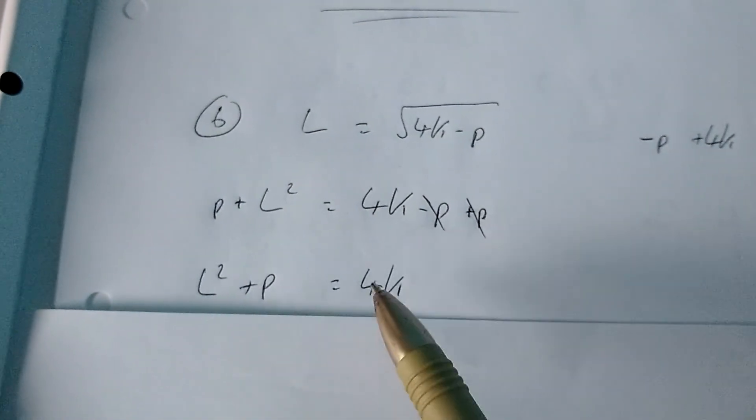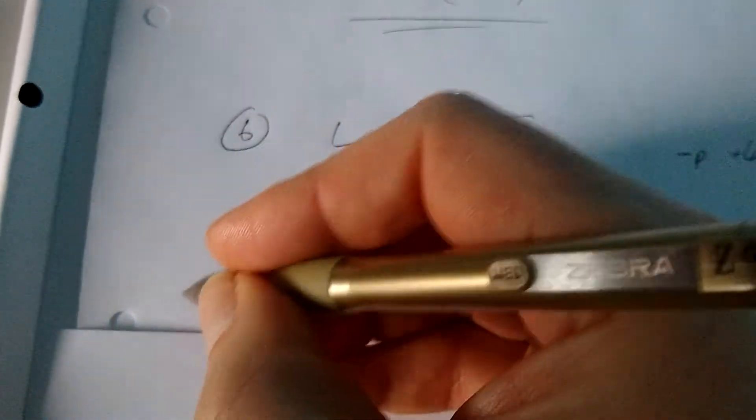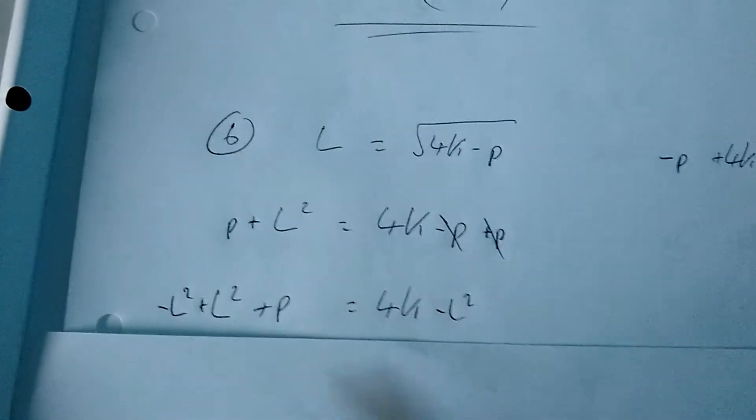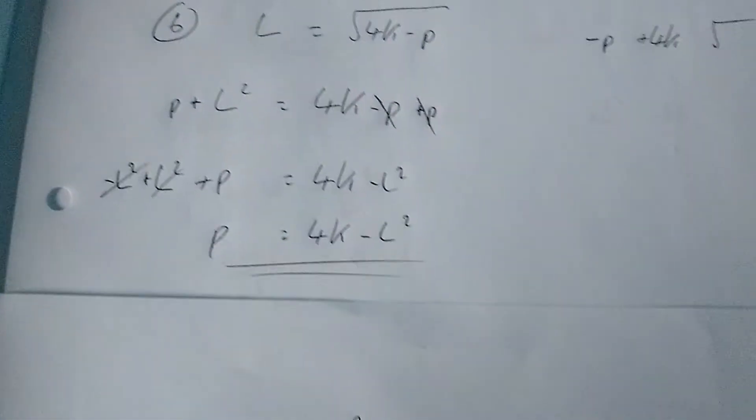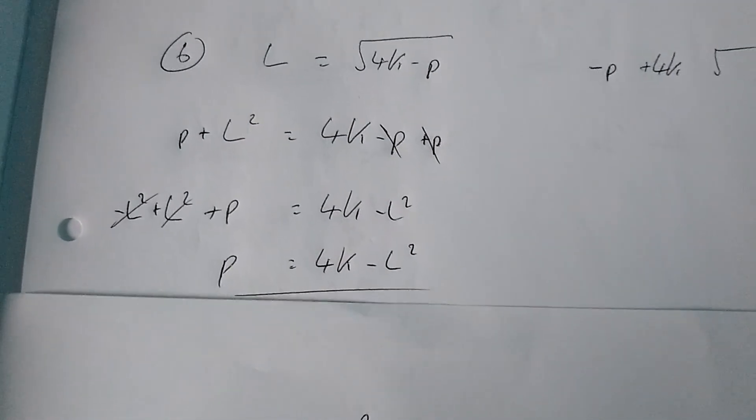And then I just need to subtract l squared from both sides. So subtracting l squared from this side just leaves me with p, and I'll have 4k minus l squared on the right hand side of the equation.